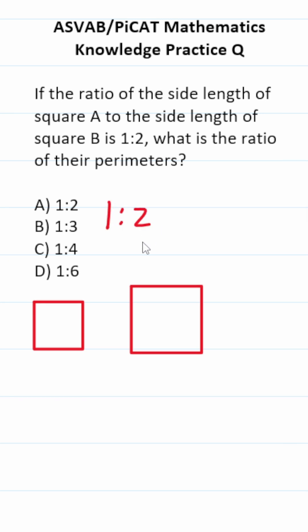So again, the side lengths of these squares have a ratio of 1 to 2. So I can say this side length is 1 and this side length is 2. That's our 1 to 2 ratio.